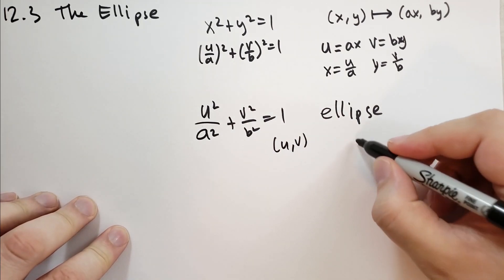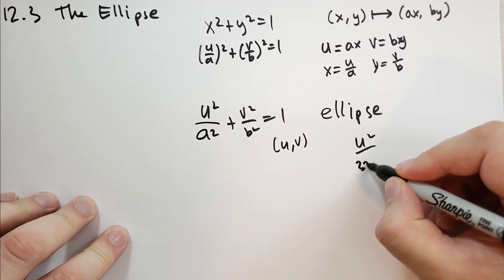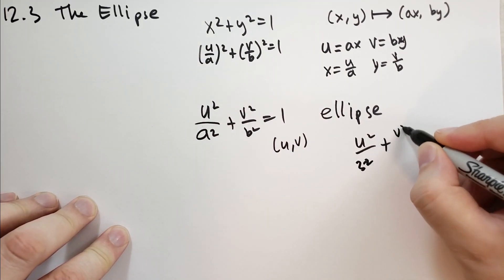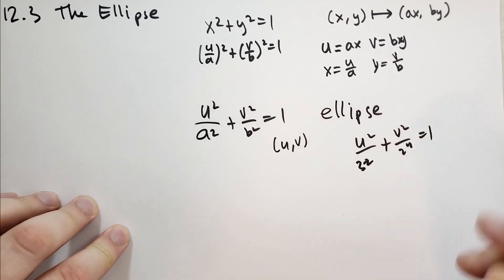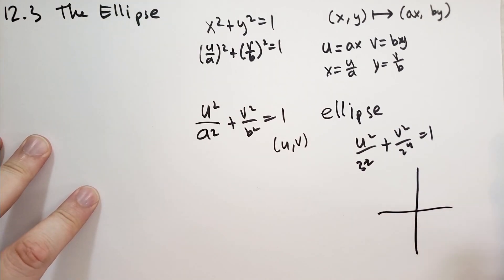Here's an example. So let's take the example of u squared over 3 squared plus v squared over 2 squared is equal to 1. What would that look like? So let me just draw that out quickly on a piece of paper here.